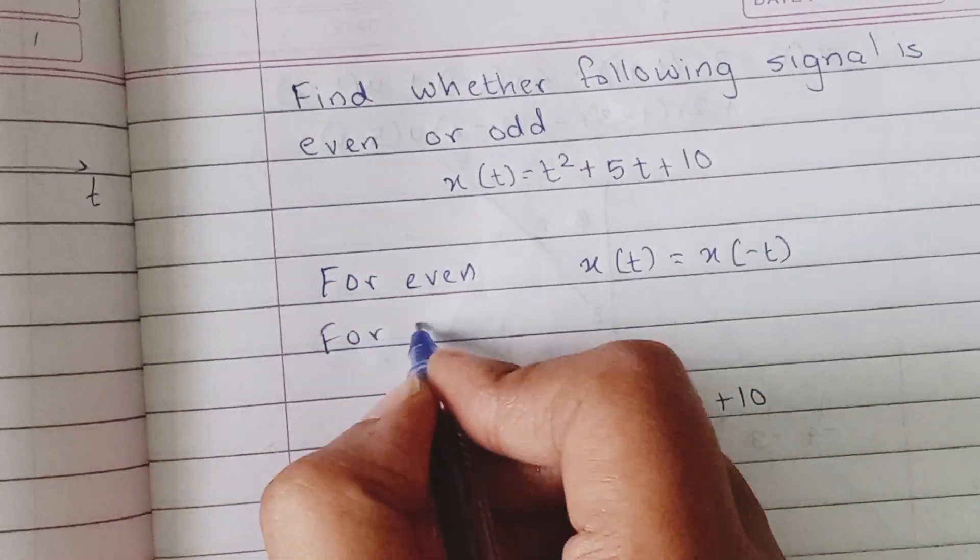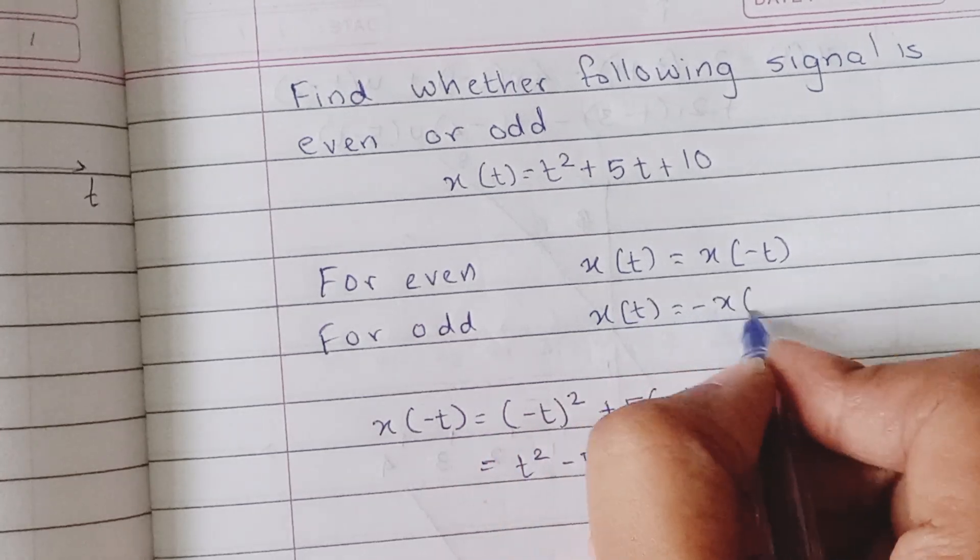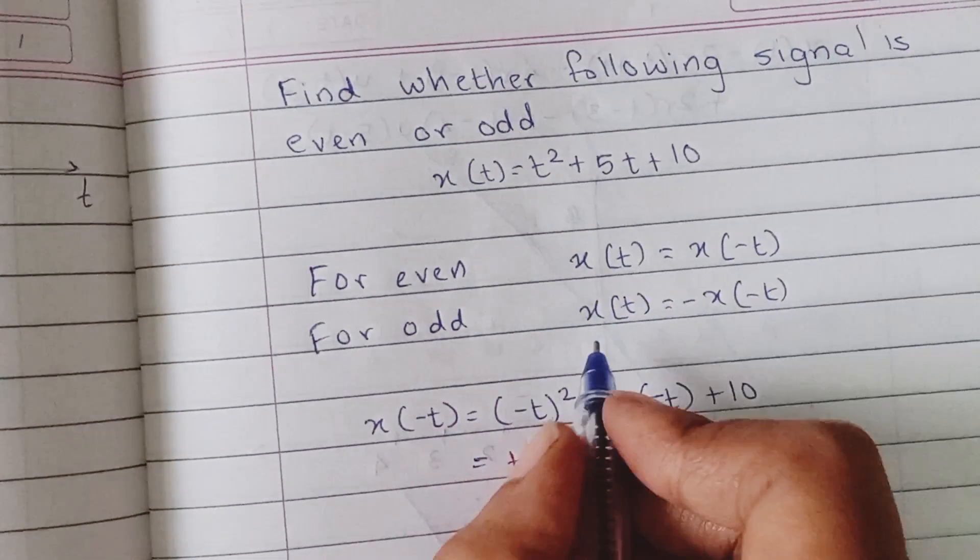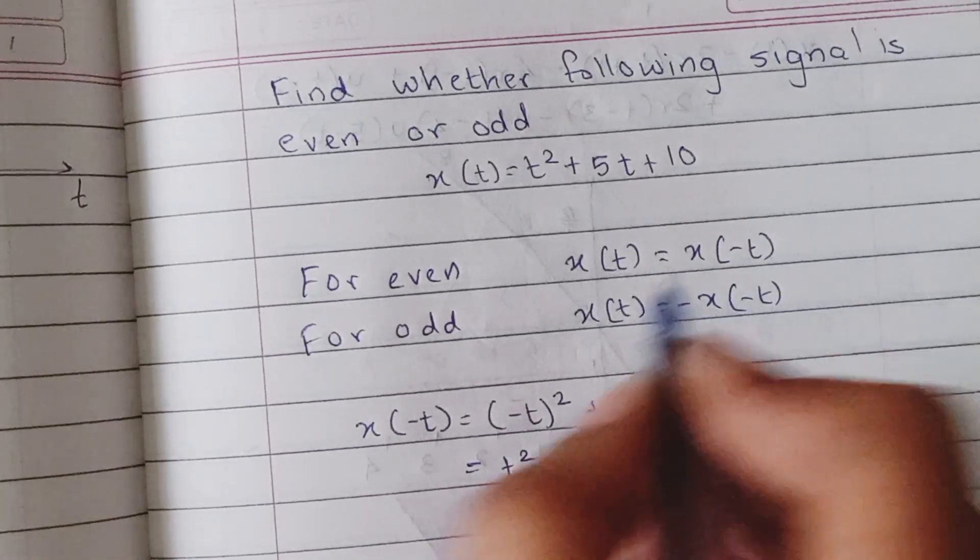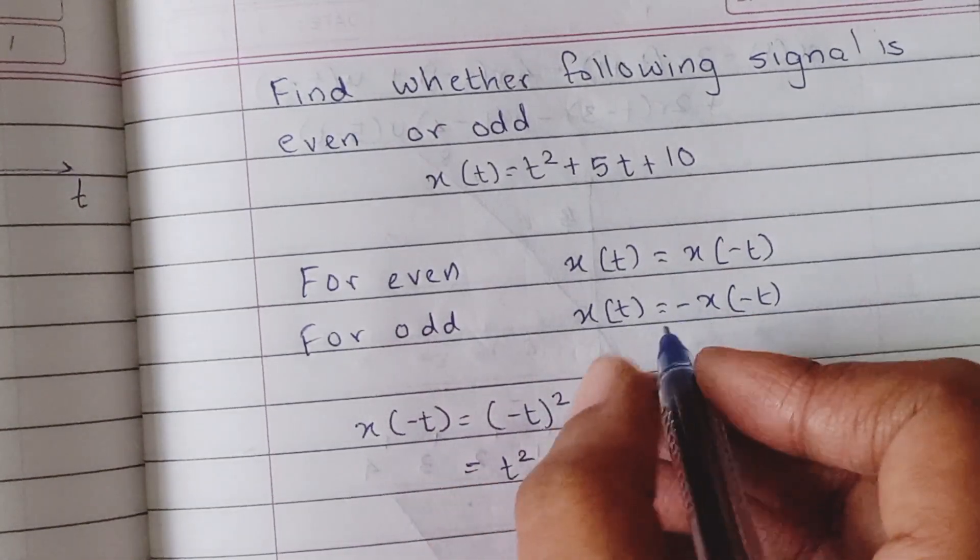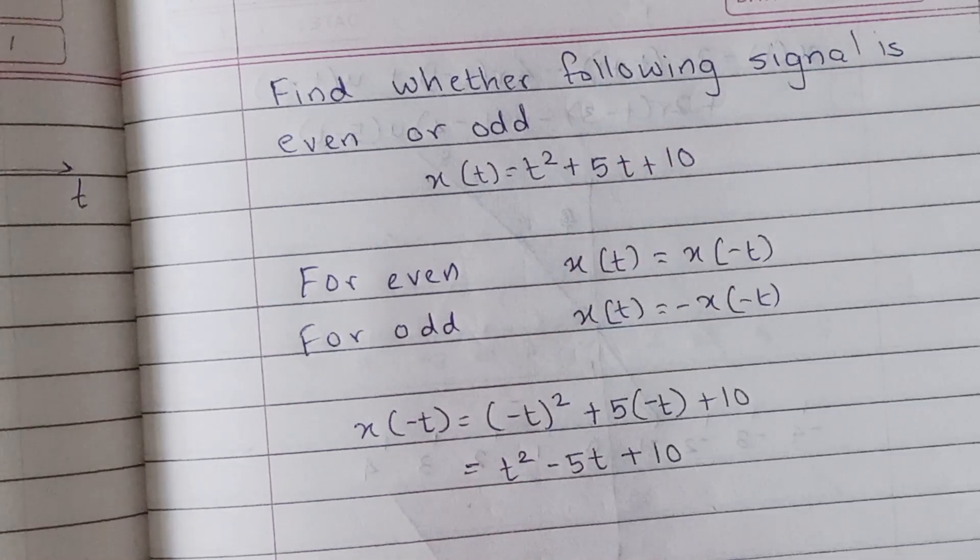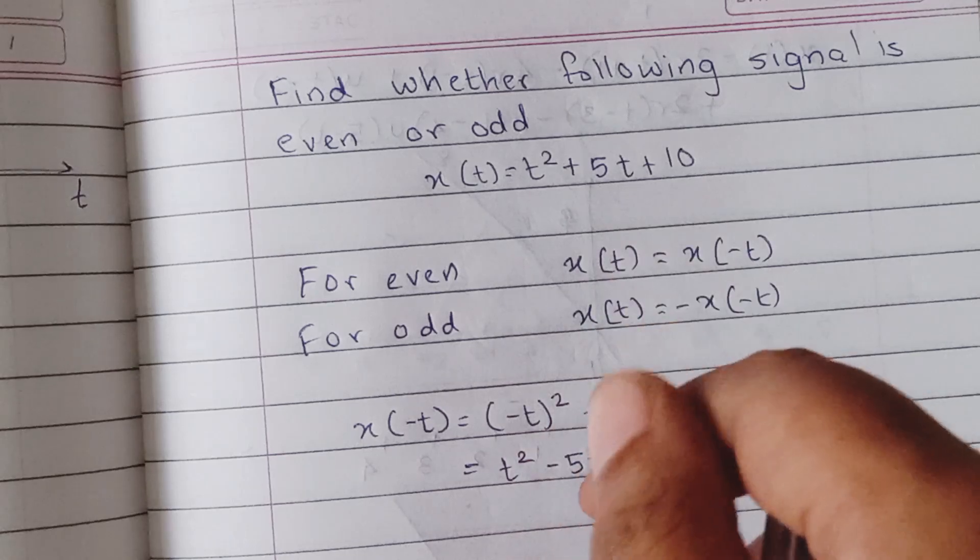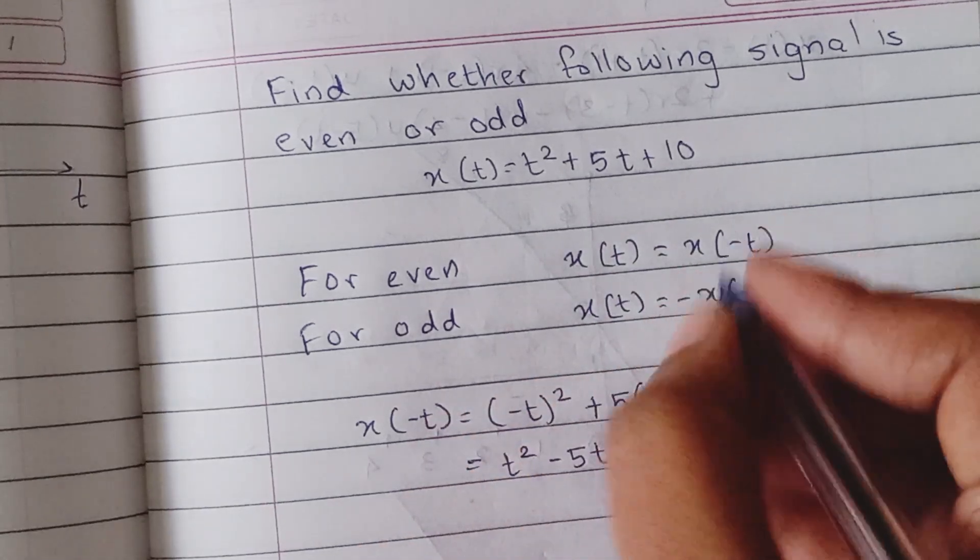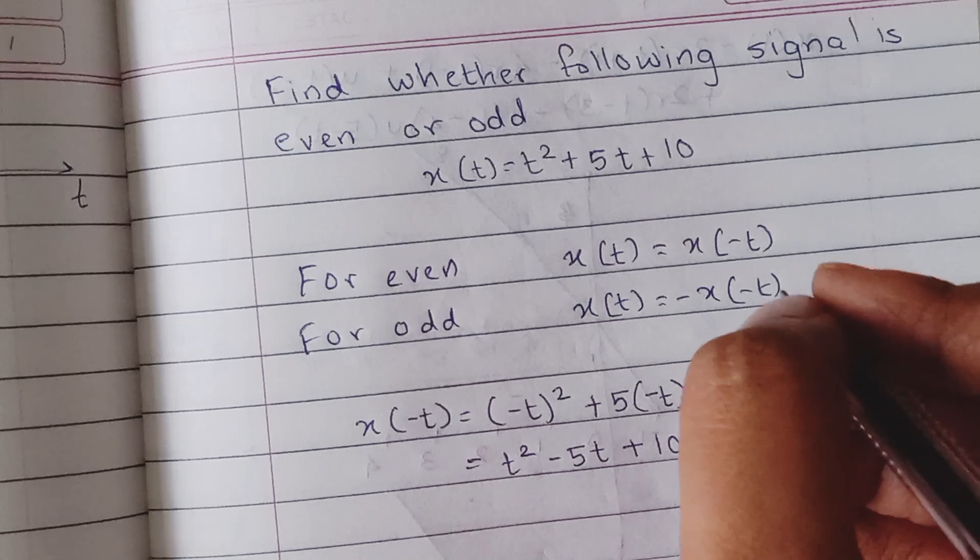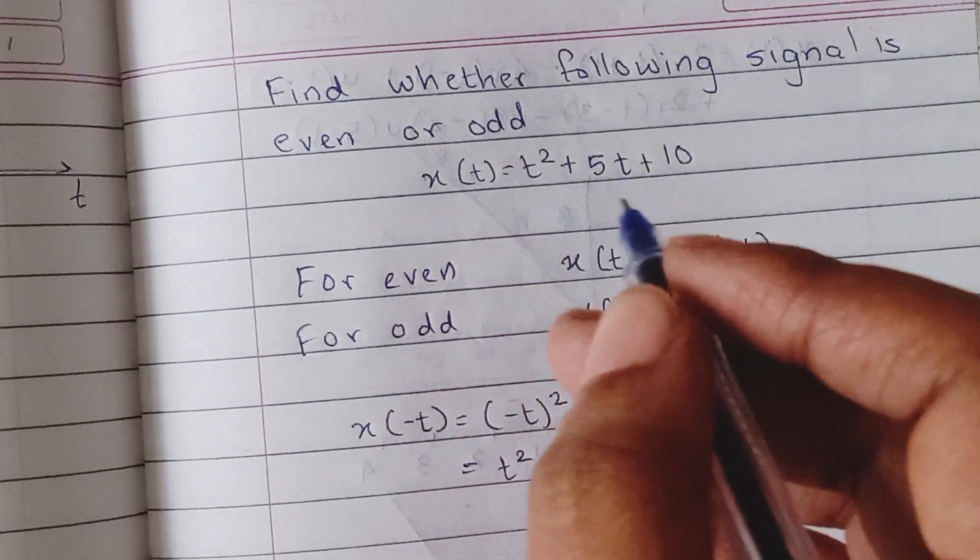For odd, x(t) should be equal to minus of x(-t), meaning the original signal should be equivalent to the reversed version which is amplitude scaled by minus one, or you can say reversed version along the amplitude axis also. Then we say that the signal is odd. But if it is not both of these, then we say it is neither even nor odd. So let's check what is this signal.